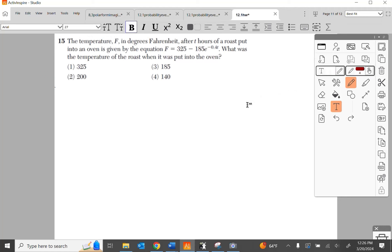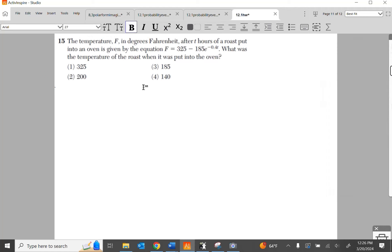The temperature F in degrees Fahrenheit after T hours of a pot roast put into an oven is given by the equation Fahrenheit is 325 minus 185E to the negative 4 tenths of T. What was the temperature of the roast when it was put in the oven? This is common sense.